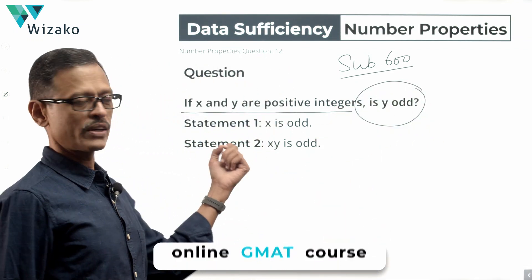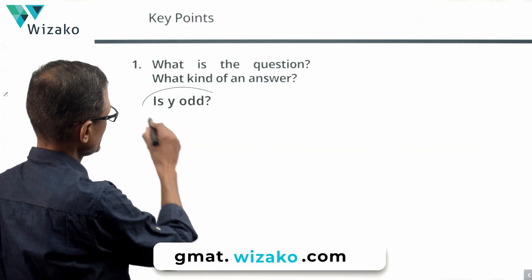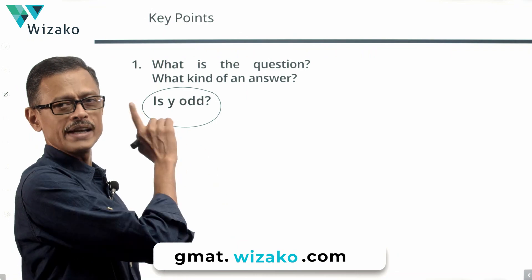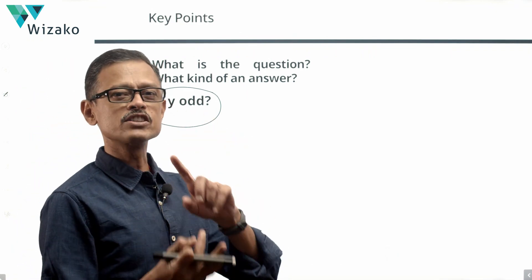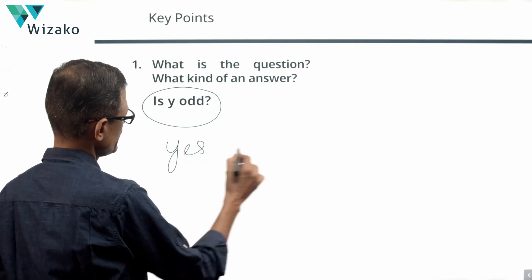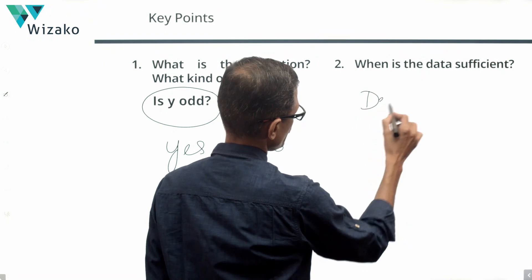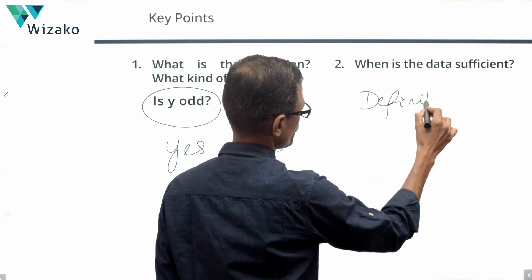Two statements are given. Let's take a look in a while. We know the five answer options. Come back to the question: is y odd? The question tells us x and y are positive integers, so y is a positive integer. We need to determine whether it is an odd integer. The answer to an 'is' question is going to be yes or no. Data is sufficient when we have a definite yes or a definite no.